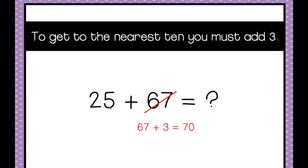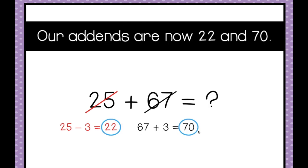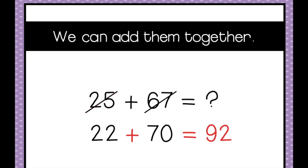That 3 actually came out of the 25. So we cross out the 25, take out 3, and add them to the 67 to make 70. Now we have two easier numbers: 22 and 70. We started out with 25 plus 67, took 3 out of the 25 and added them to 67, so now we have 22 and 70. We can do that in our heads — that's 92. So 25 plus 67 also equals 92.